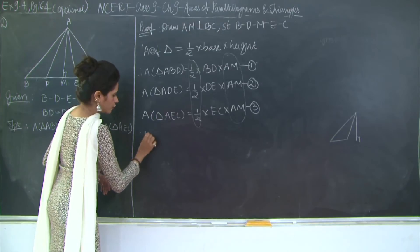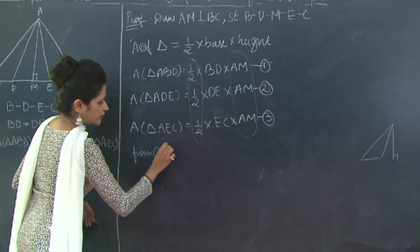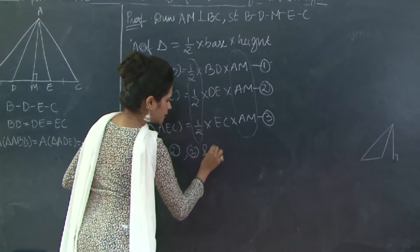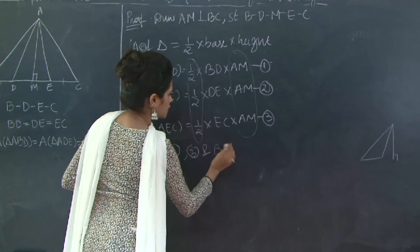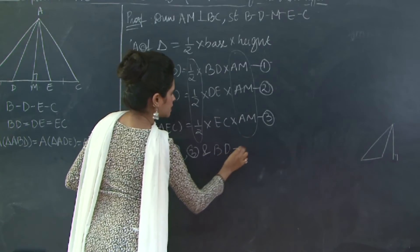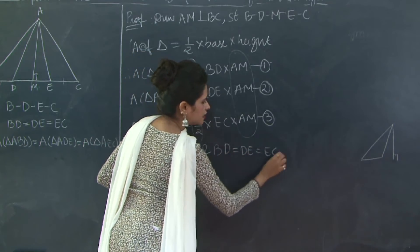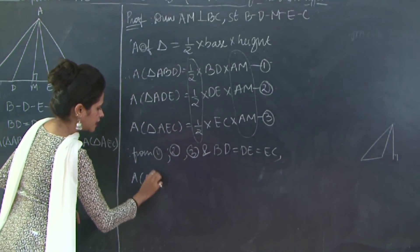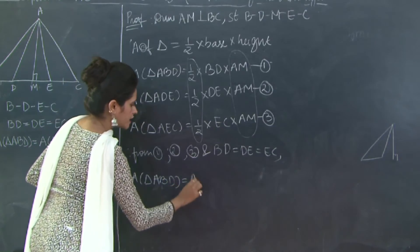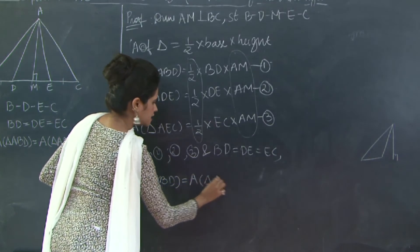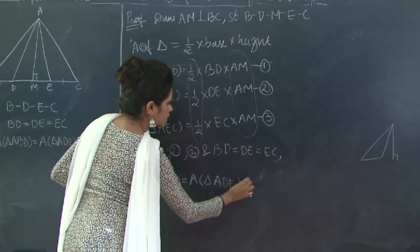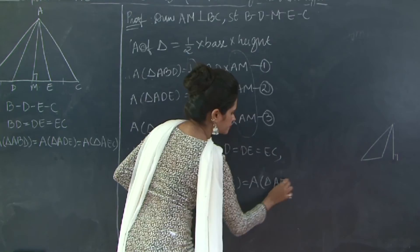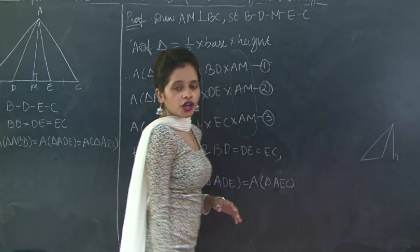Therefore from 1, 2, 3 and given that BD is equal to DE is equal to EC, we can say that area of triangle ABD is equal to area of triangle ADE is equal to area of triangle AEC. Hence proved.